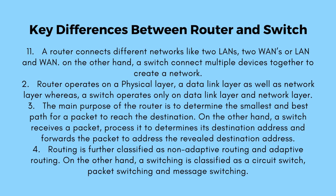Number 3: the main purpose of a router is to determine the smallest and best path for a packet to reach its destination, whereas a switch receives a packet, processes it to determine its destination address, and forwards the packet to that destination. Number 4: routing is further classified as non-adaptive routing and adaptive routing, whereas switching is classified as circuit switching, packet switching, and message switching.